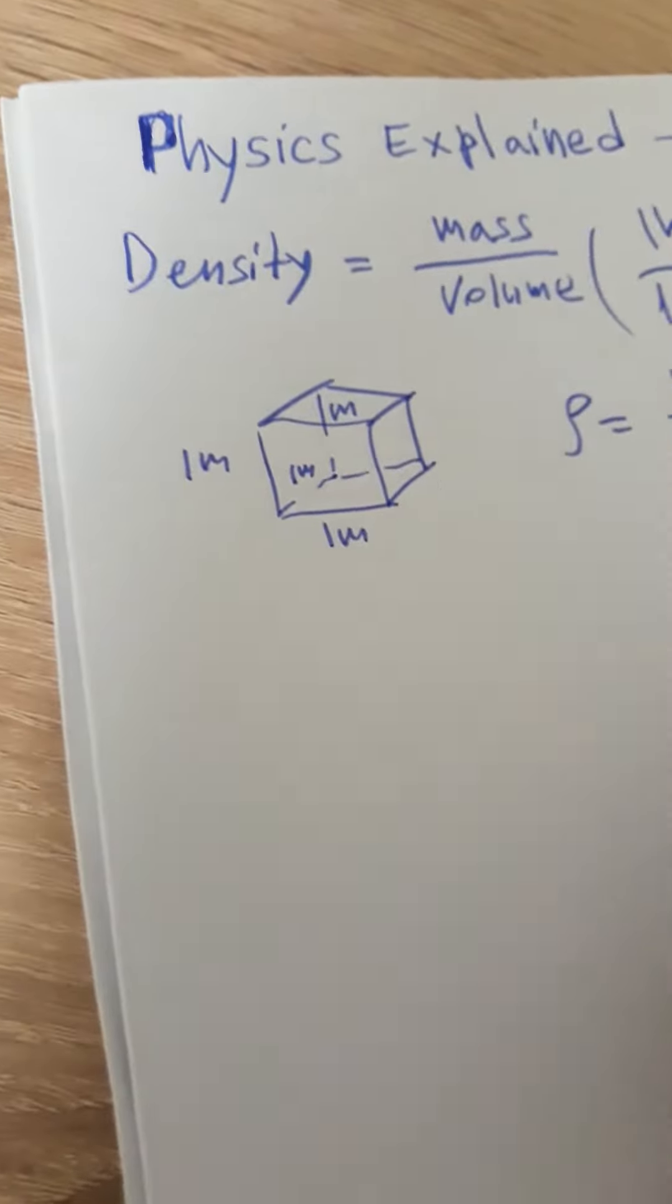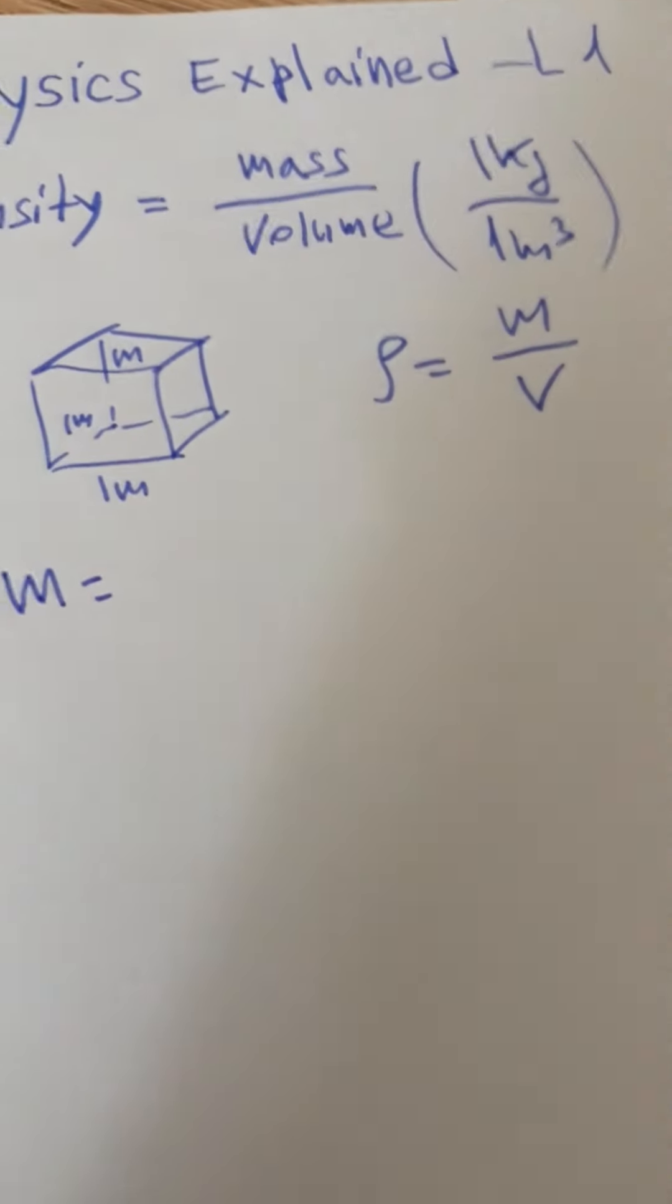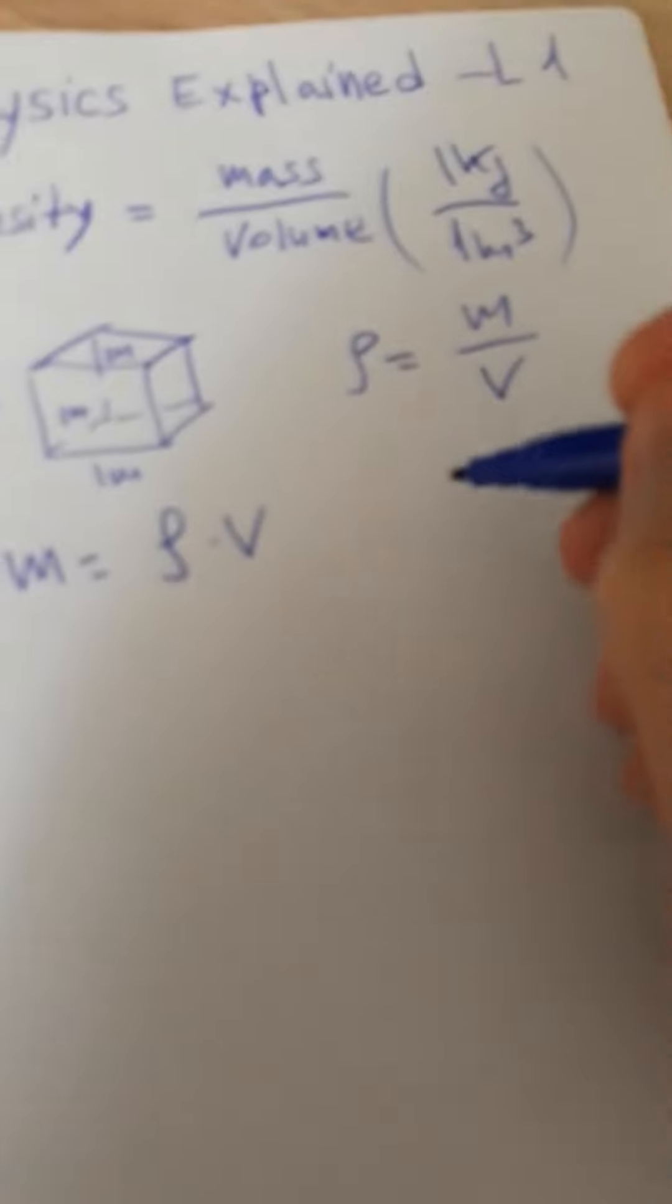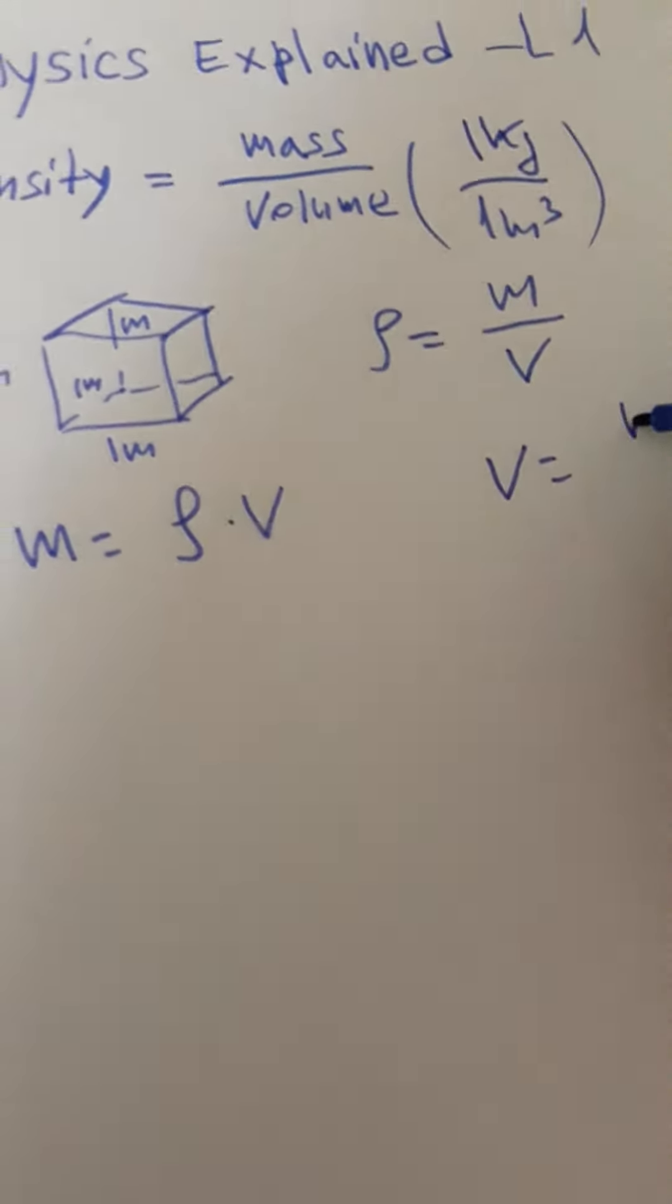From here we can write that the mass is density times volume, and also that the volume is mass over density.